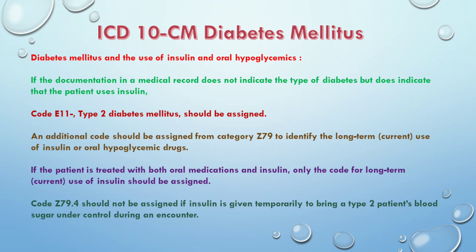If the documentation does not indicate the type of diabetes but does indicate that the patient uses insulin, code E11 type 2 diabetes mellitus should be assigned. An additional code should be assigned from category Z79 to identify the long-term use of insulin or oral hypoglycemic drugs.